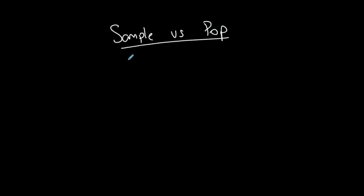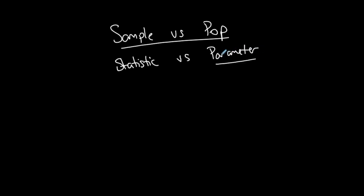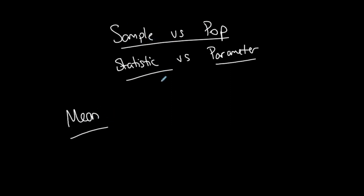We talked about sample versus population earlier — statistic versus parameter — and this is where it comes up again. A population is the entire big group; a sample is a piece of that group. A parameter is a value calculated from a population, and a statistic is a value calculated from a sample. When I talk about the mean, I have different notation for a sample mean versus a population mean.